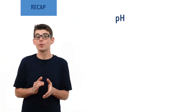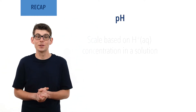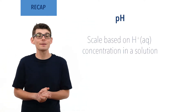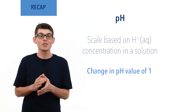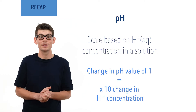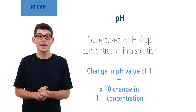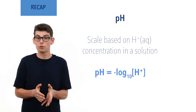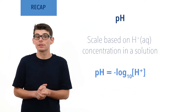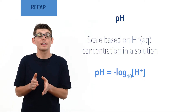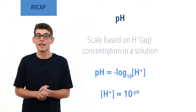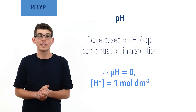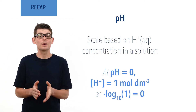pH is a scale used to represent the concentration of H plus ions in a solution. The scale is logarithmic to the base 10, meaning a change in pH of 1 represents a change in H plus concentration of 10 times. pH can be represented in two ways: pH equals minus log of concentration of H plus ions, and equivalently, concentration of H plus ions equals 10 to the power minus pH. The scale starts at zero, representing an H plus concentration of 1 mole per decimetre cubed. Recap done — let's go!